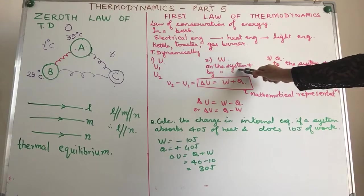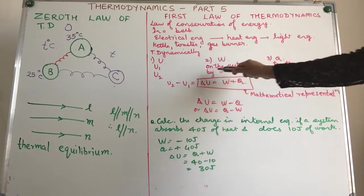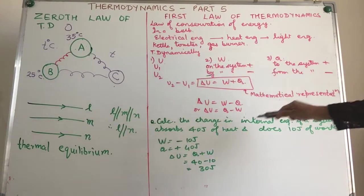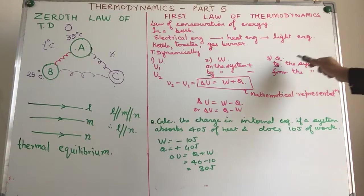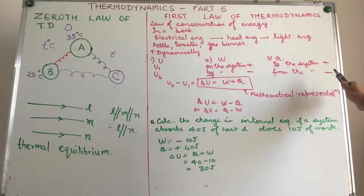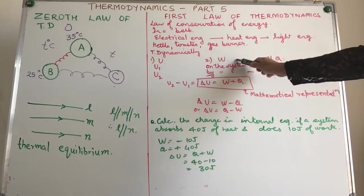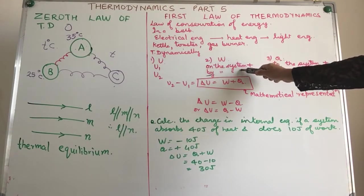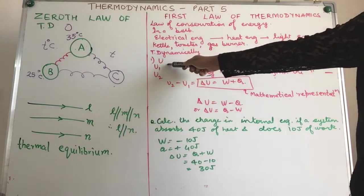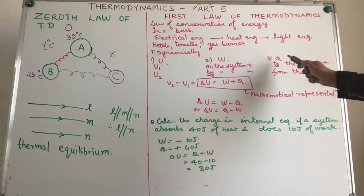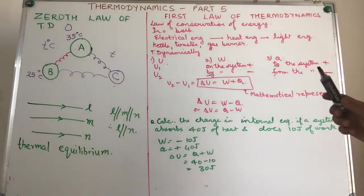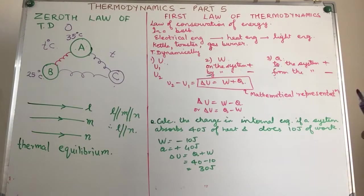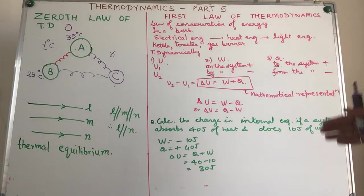You know that work done on the system is positive, by the system is negative. Heat added to the system is positive, heat removed from the system is negative, simply. Now when you do certain amount of work on the system, its internal energy will increase. When you add Q amount of heat to the system, again its internal energy will increase.